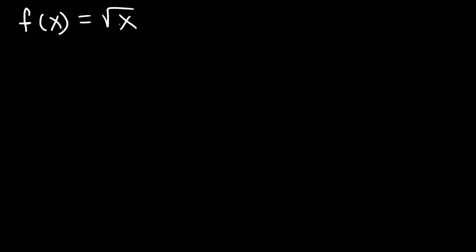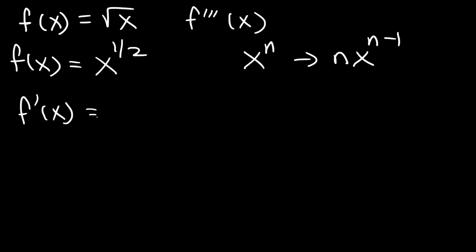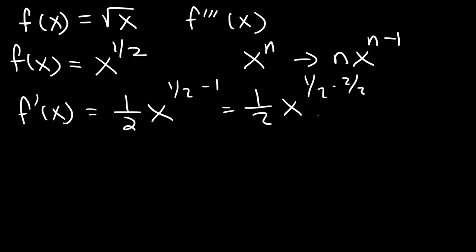Now let's say if f of x is equal to the square root of x, and we need to find the third derivative, f triple prime of x. First, we need to rewrite the expression. The square root of x is the same as x to the 1 half. Using the power rule — nx raised to the n minus 1 — it's going to be 1 half x raised to the 1 half minus 1. Now, 1 half minus 1 is negative 1 over 2. So this is the first derivative.